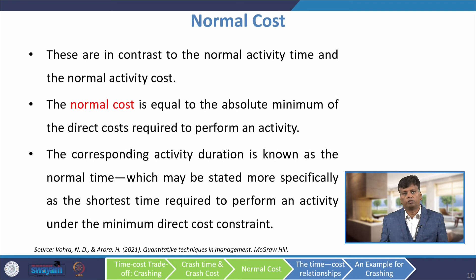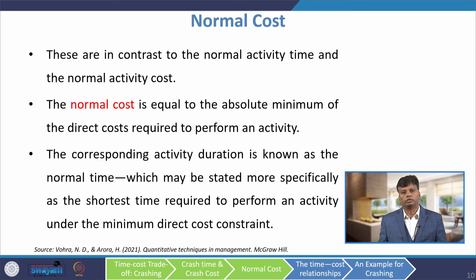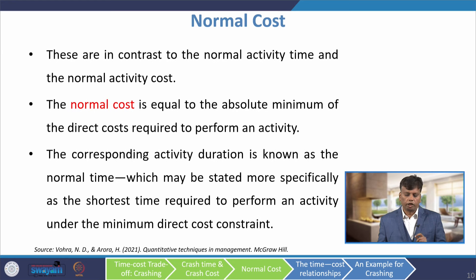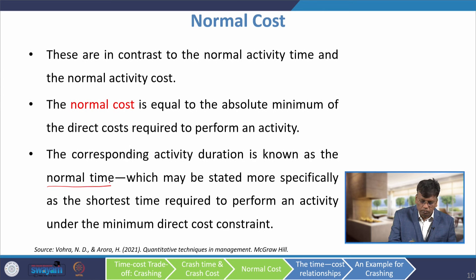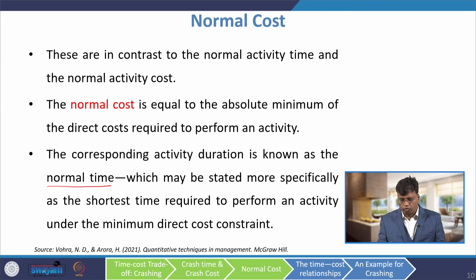The activity cost corresponding to the crash time is called crash cost, which equals the minimum direct cost required to achieve the crash performance time. These are in contrast to normal activity time and normal activity cost. The normal cost is the absolute minimum direct cost required to perform an activity, and the corresponding activity duration is known as normal time — the shortest time required to perform an activity under the minimum direct cost constraint.